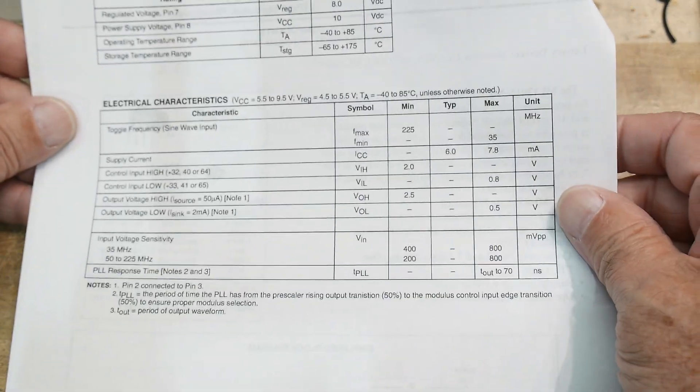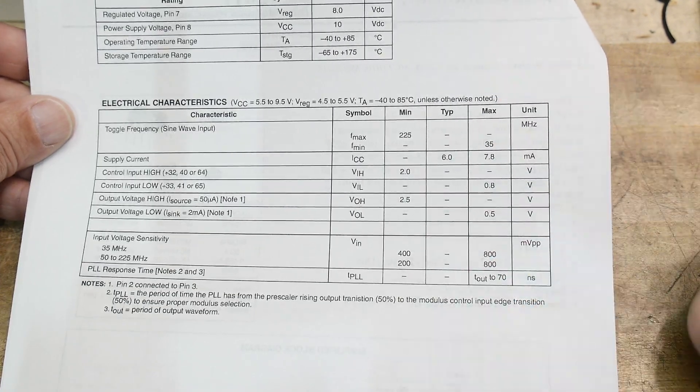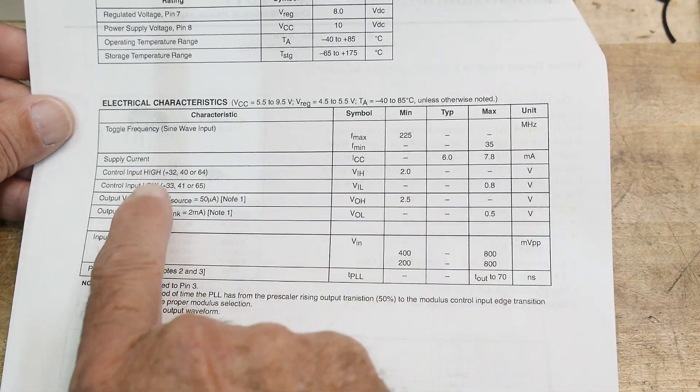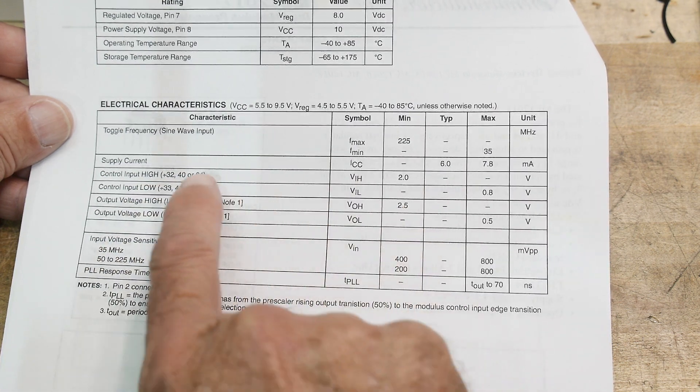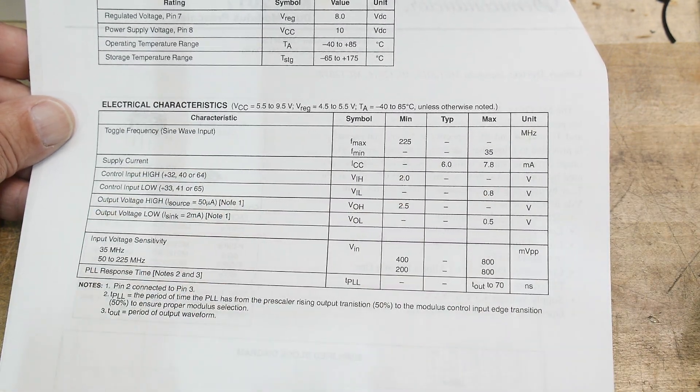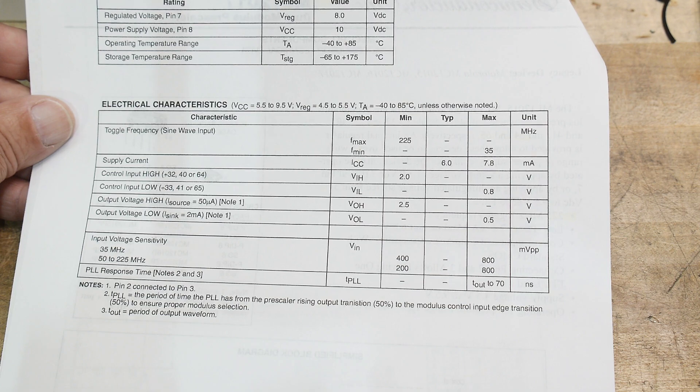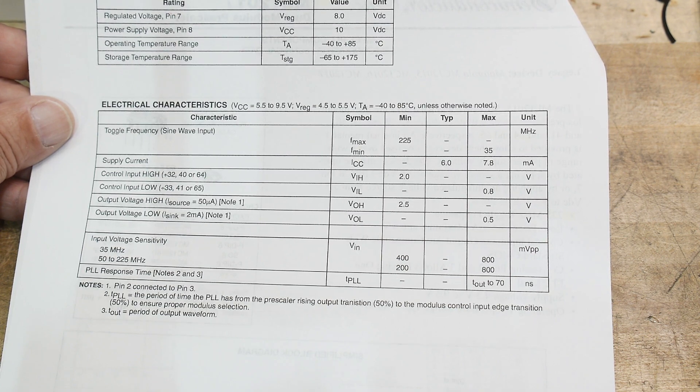Let's see here. Again, we have 225 megahertz control pin. Here we go. If the control pin is high, it divides by 64. If the control pin is low, it divides by 65. So yeah, that's kind of weird.